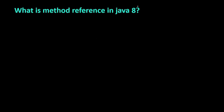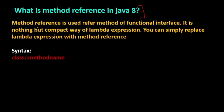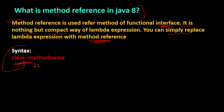What is a method reference in Java 8? A method reference is used to refer to a method of a functional interface. It is nothing but a compact form of a lambda expression — you can simply replace a lambda expression with a method reference when applicable. The syntax uses the class name followed by double colons (::) and the method name, as we have seen in previous coding examples.